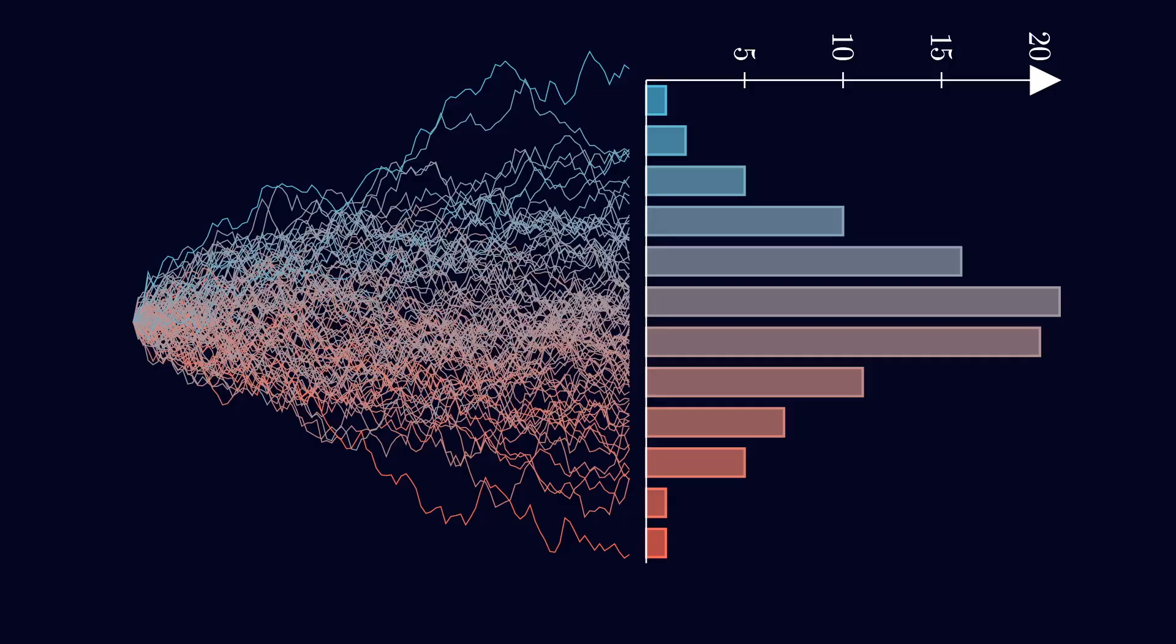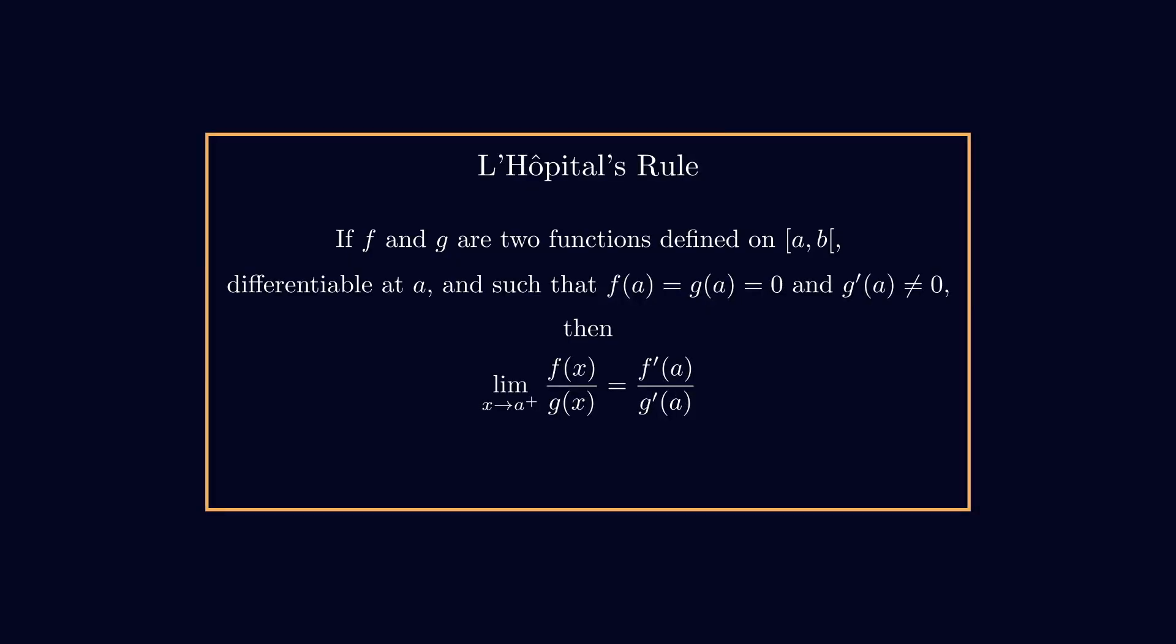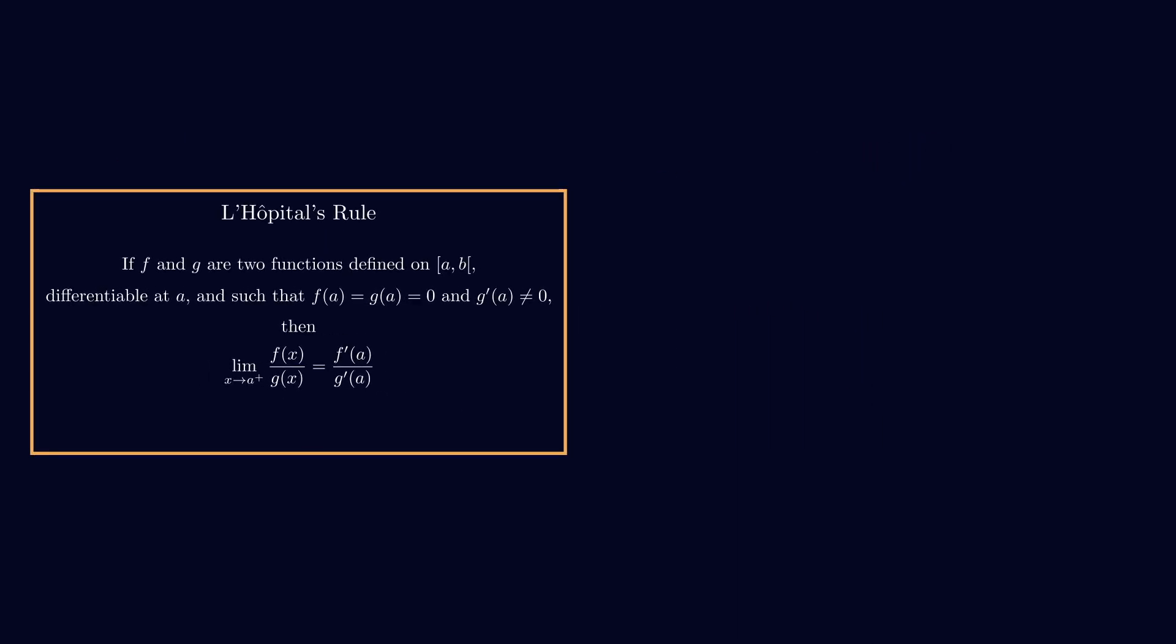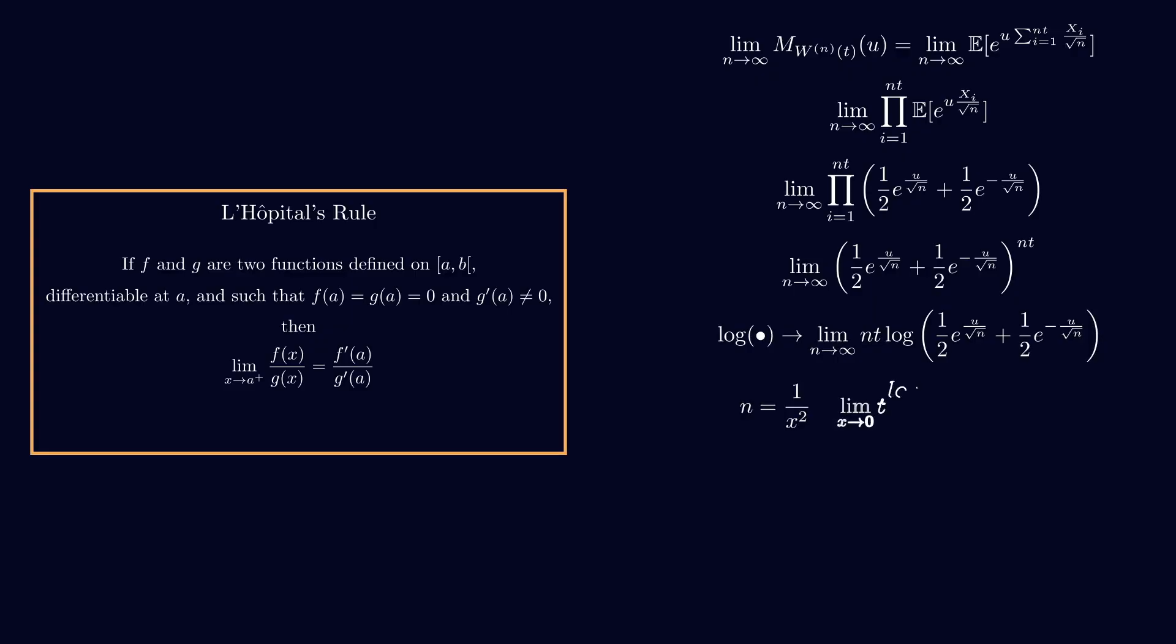So this brings us to one of the hardest parts of the video. To prove it, we need to use L'Hôpital's rule. What we want to prove is that, as n goes to infinity, the moment generating function becomes the same as for a normal distribution. First, we use the definition of the MGF. Then, we apply the property that the exponential of a sum is the product of exponentials. Then, we recognize that the mean is the average between the two possible outcomes, plus 1 and minus 1. Then, we see that this is equivalent to raising the same term to the power of nt. After that, we take the logarithm of the equation. Next, we do a change of variable. And finally, we apply L'Hôpital's rule one time, and another time.